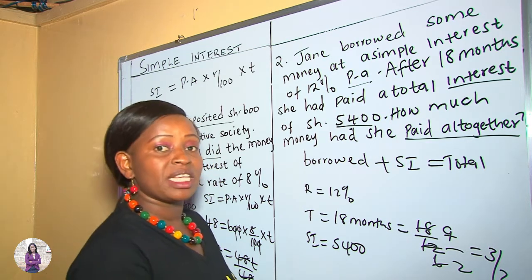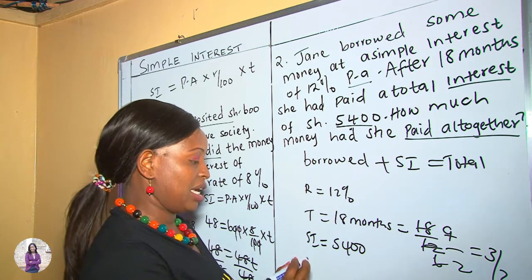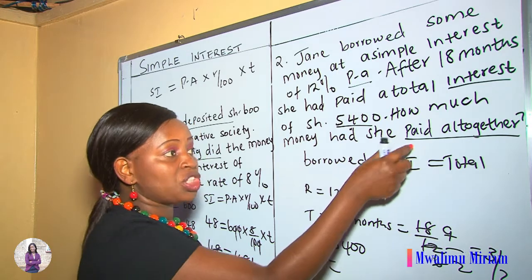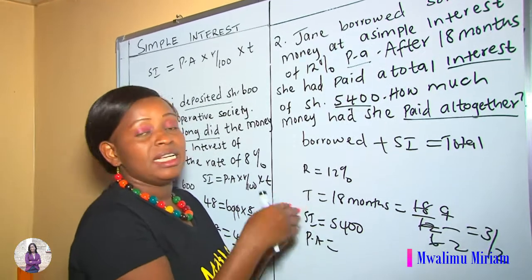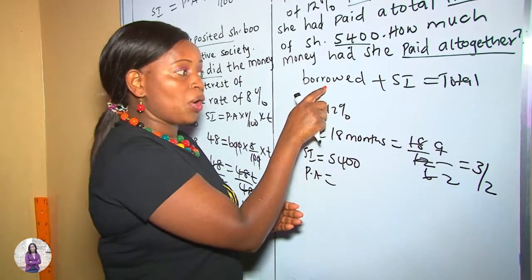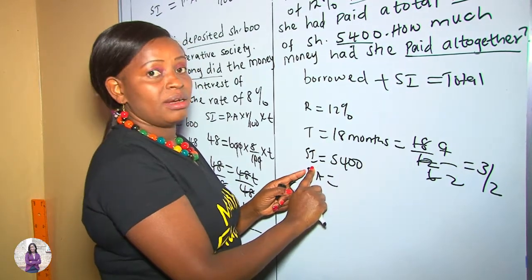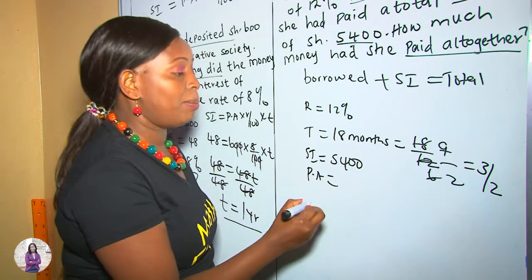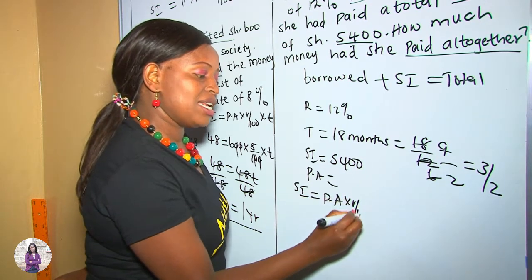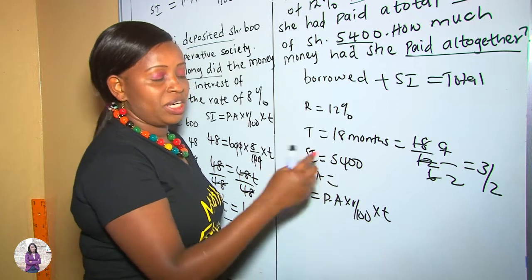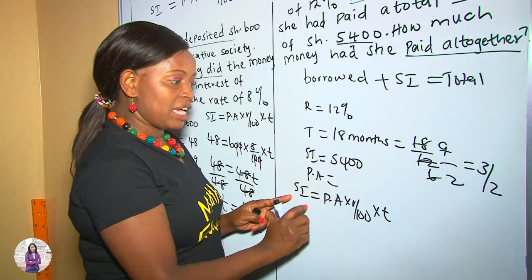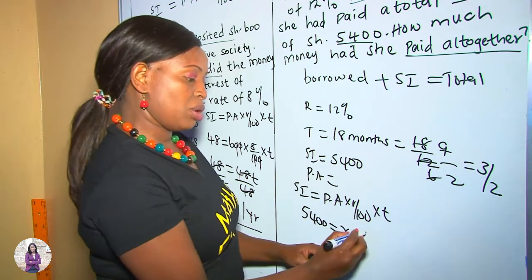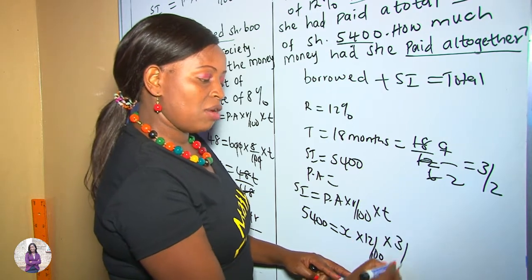Something is not given in this question, and that is the principal amount — the money that was borrowed. This is very important because the question asks how much Jane returned in total: that is the principal amount plus the simple interest. So we apply the simple interest formula. SI = PA × rate/100 × time. We have 5,400 equals x (the unknown principal) times 12/100 times 3/2.